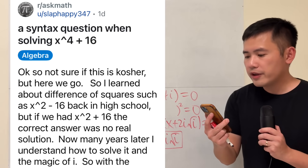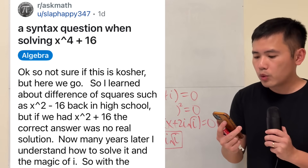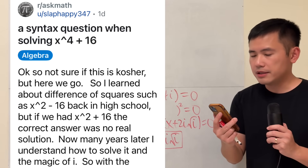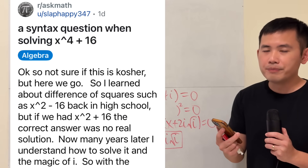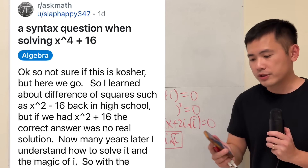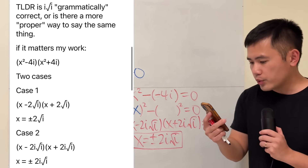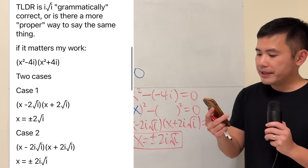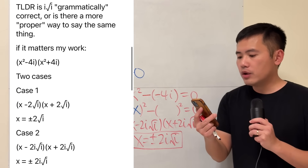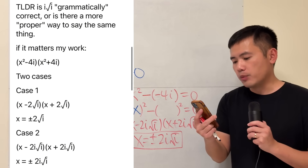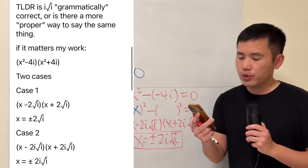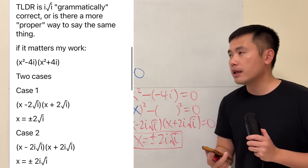A syntax error when solving x to the fourth power plus 16 is equal to 0. The main question is: is i times square root of i grammatically correct, or is there a more proper way to say the same thing?